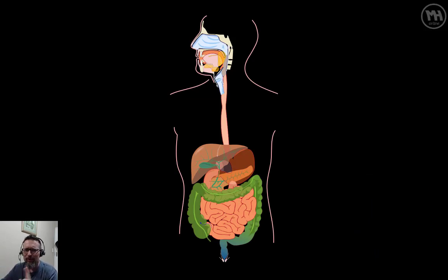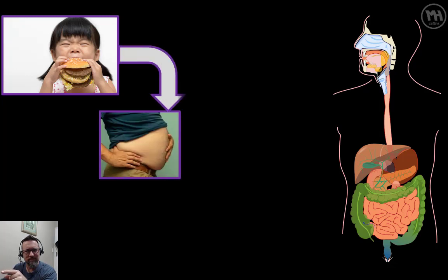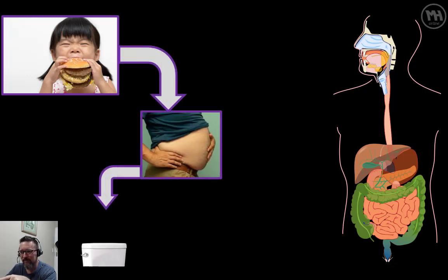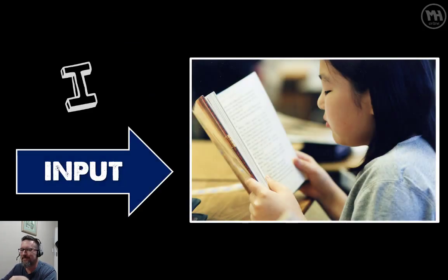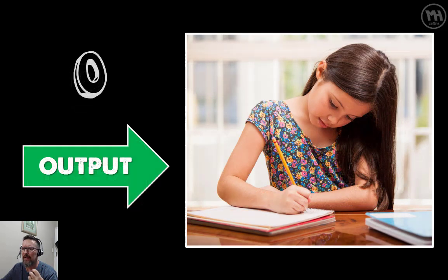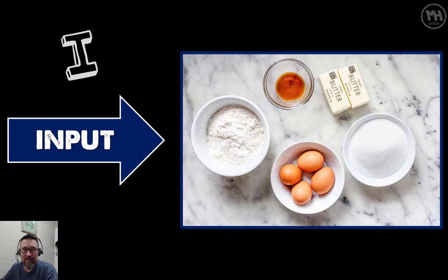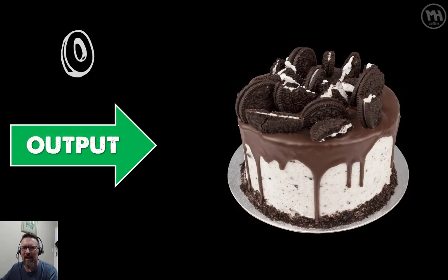Let's look at some more examples of input, process, output. Here we have input: someone taking information or instructions from written material; processing that information — making sense of it in their brain; and the output: putting that information down in something we can understand or acting upon it. Here's another example — input: basic ingredients for baking a cake. Process: putting all the ingredients together, following the instructions in the recipe. And that of course produces the output.